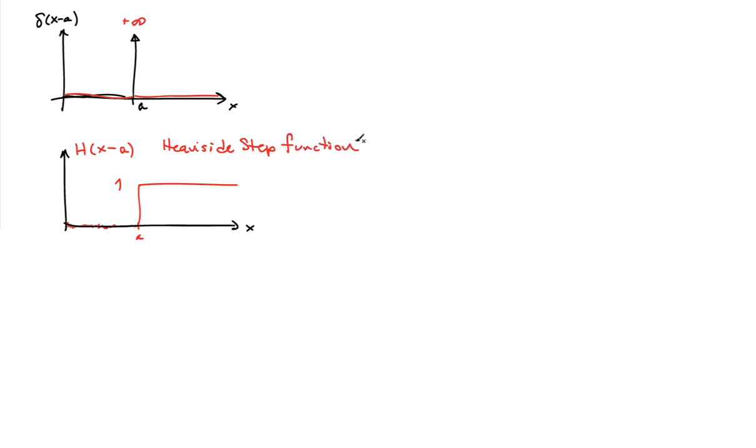So that's the Heaviside step function. It is spelled with an I here. This is actually somebody's name. And h of x itself is a function that is 0 for x less than 0. And it's 1 for x greater than 0. You can define it at x equals 0, but it really is unnecessary. And it really represents something physically that you don't know. In other words, what's happening right in the middle of the jump.